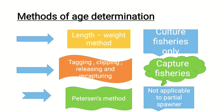The length-weight relationship method was only applicable to culture fisheries, so it had some disadvantages. Another method was tagging, clipping, releasing, and recapturing, applicable only to capture fisheries. The Peterson method and other indirect methods also emerged, such as counting hard parts like scales and otoliths annually to determine age. Frontal bones, cleithrum, and otoliths all represent the age of a fish. However, the Peterson method was not applicable to partial spawners.